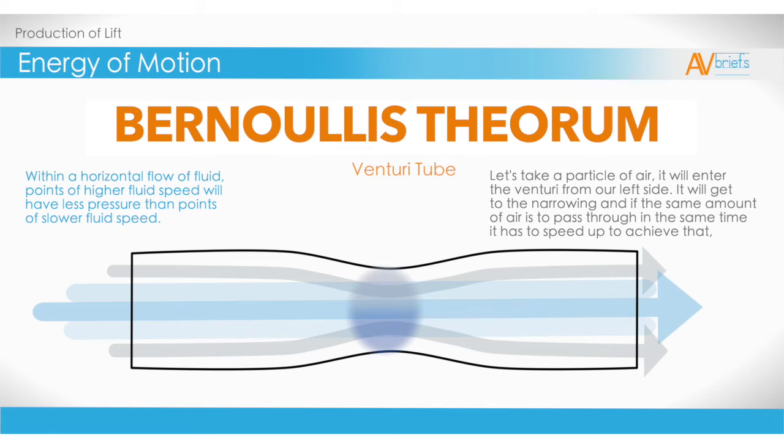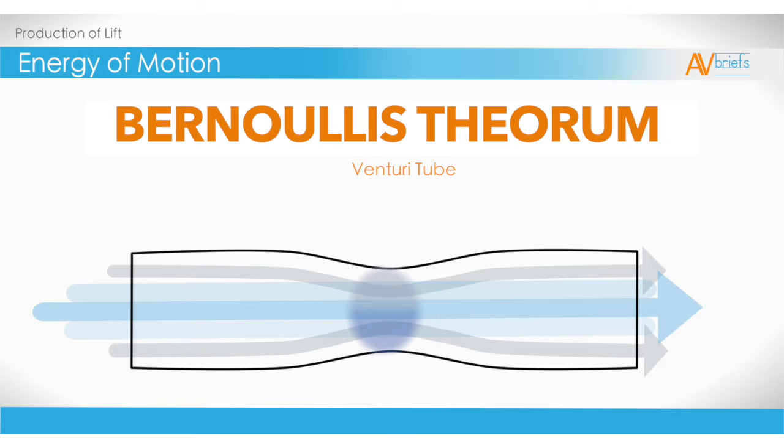Let's take a particle, a molecule, same thing, of air. It will enter the venturi from our left side. It will get to the narrowing in the middle. If it is to pass through the narrowed middle with the same amount of air as when in the left side, it will need to speed up to achieve this. Remember, that need for the air to speed up is to get the same volume of air through the smaller middle as went through the opening.